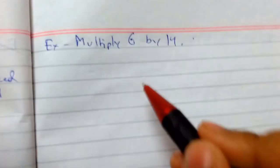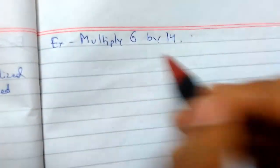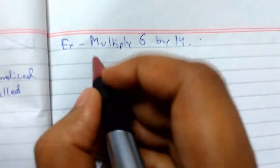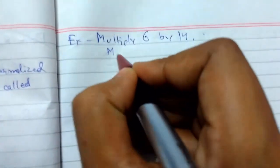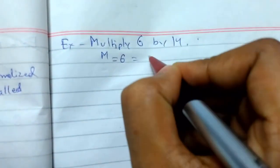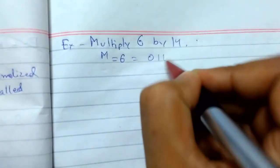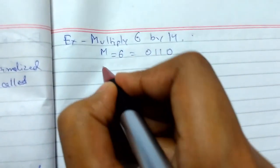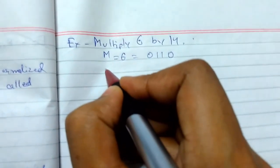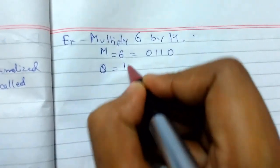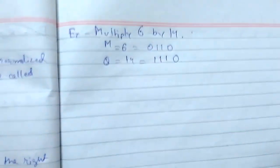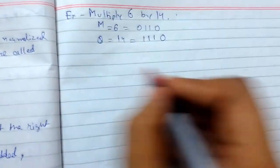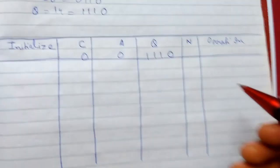I'll explain this with an example. We need to multiply 6 by 14 using sequential unsigned binary multiplication. Our multiplicand M equals 6, which we convert to binary (0110), and our multiplier Q equals 14, which is 1110 in binary.